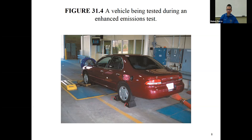Typically what happens is that we run the vehicle at about 15 miles per hour, plus or minus one mile per hour, for about 90 seconds. Then we accelerate up to 25 miles per hour. We put different load values on the roller so it can create a load on the vehicle. That's important because it's the only way to measure NOx. We measure three gases — actually five — but the three that can make the vehicle fail are carbon monoxide, hydrocarbons, and oxides of nitrogen.